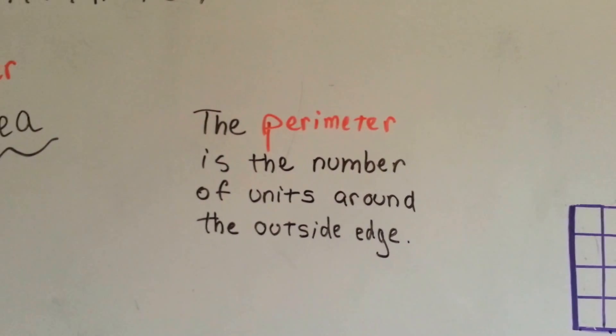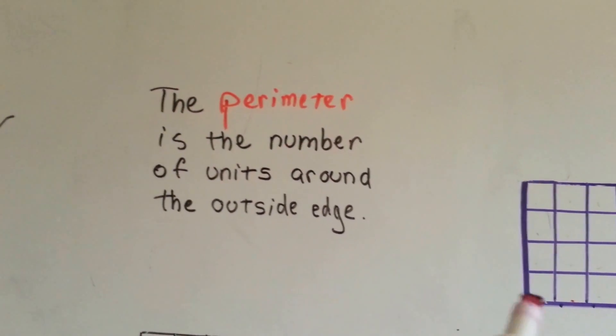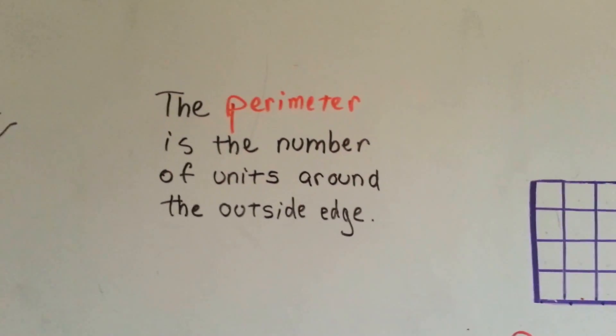Whether it's inches, yards, feet, paper clips, crayons, whatever the unit you're using, that's how many you would use to count around the outside edge like a fence.